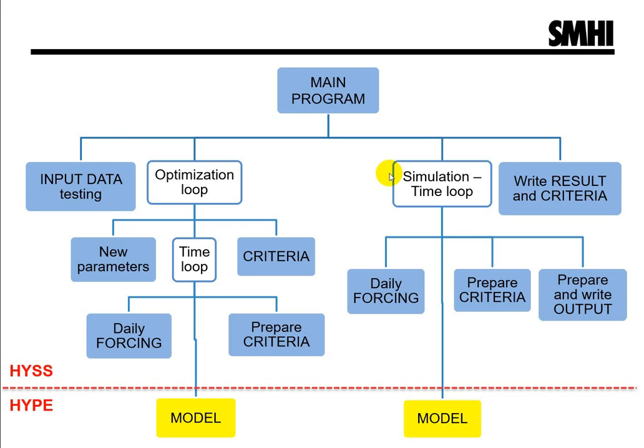The model simulation iterates through a series of tasks for each time step: get the forcing data, which can be read from file or from memory; simulate the hydrological processes of the model; accumulate data for performance criteria calculation; and accumulate data for output, writing time series output at each time step. After the simulation, remaining tasks include calculating and writing other outputs such as subbasin performance criteria.